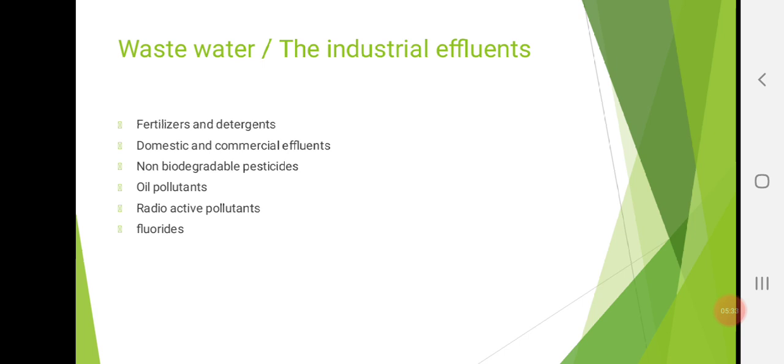Non-biodegradable pesticides travel through the food chain and enter into the human body and affect the nervous system. Then, oil pollutants. Through the oil tankers carrying the oil and through the industrial effluents, the oil gets spread over the water, creating a thin layer over the water surface. We know this. Even we have seen this. This affects the water cycle and leads to death of water, birds, and fishes.